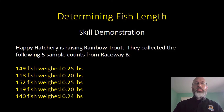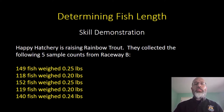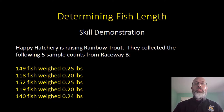When these folks were taking a sample at Happy Hatchery raising rainbow trout, they collected five sample counts from Raceway B. They collected five because the more samples you collect, the better your data will be. The counts were: 149 fish at 0.25 pounds, 118 fish at 0.2 pounds, 152 fish at 0.25 pounds, 119 fish at 0.2 pounds, and 140 fish at 0.24 pounds.